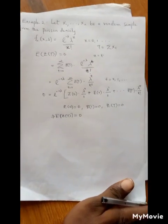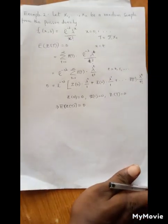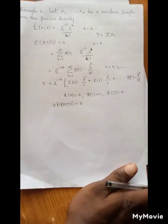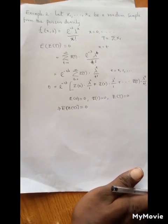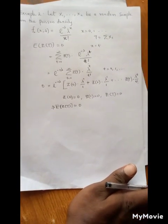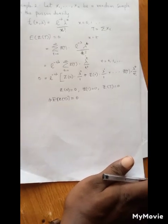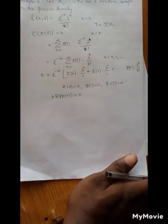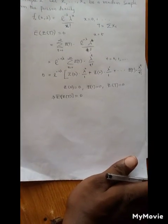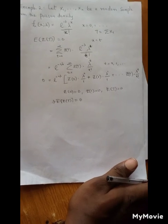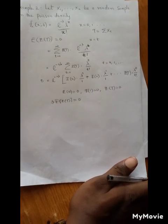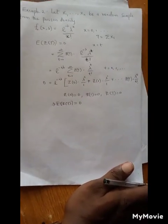Having gotten to this point, we can now conclude that the Poisson distribution comes from a family whose density is complete, and therefore T, which is the sufficient statistic, is complete.